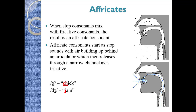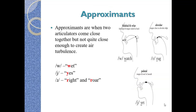Approximants are sounds that occur when two articulators come close together, but not quite close enough to create airflow noise. There is airflow but without any noise. Two articulators come close to each other but different articulators come close without creating turbulence.